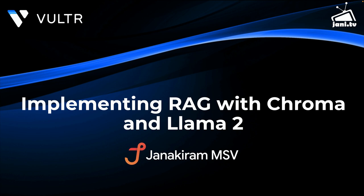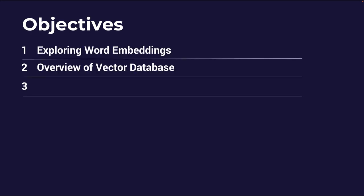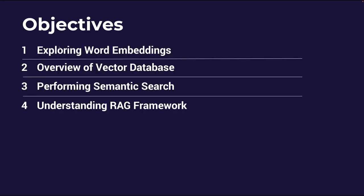This section is all about implementing retrieval augmented generation with Chroma and Llama 2. We'll start exploring word embeddings, then I'll introduce you to the vector database, which is Chroma. We'll take a look at semantic search and how to implement that using Chroma, and finally we'll bring all of that together and implement the RAG framework.